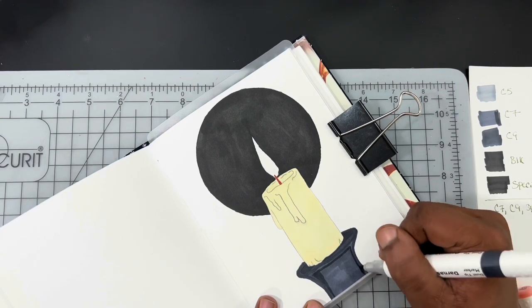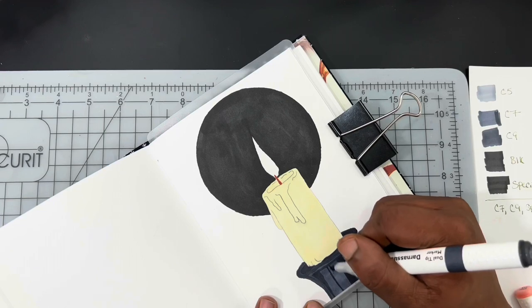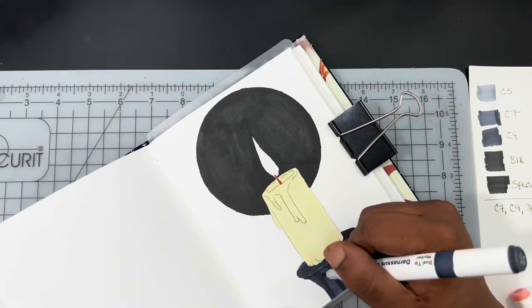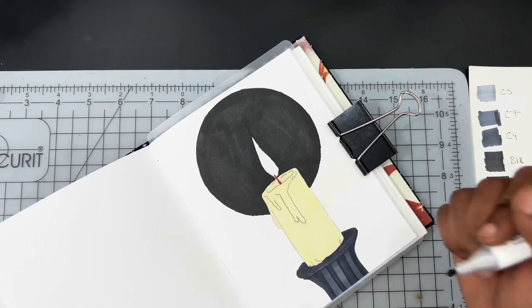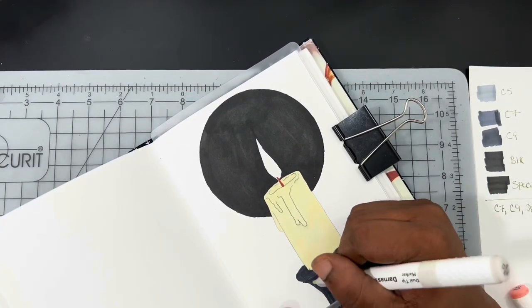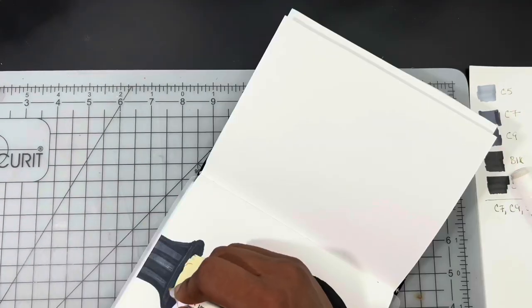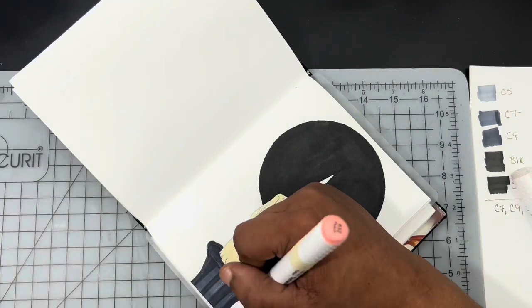And the circle behind the candle was originally being shaded in with a color called special black, but that marker was dry immediately out of the pack. So I had to switch over to the regular black marker to finish shading that in. Now, that circle is actually going to get bigger a little bit later on, but we'll come across that in just a second.